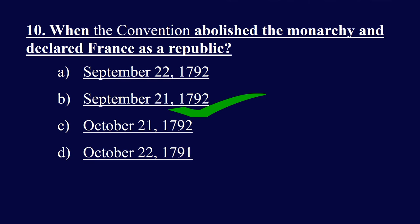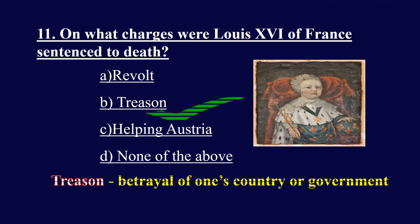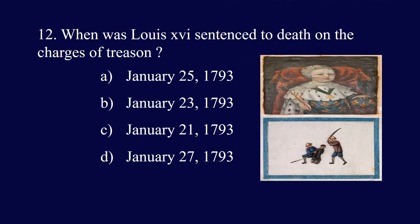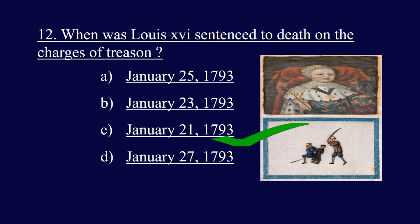Question eleven: On what charges was Louis 16 sentenced to death? Options: revolt, treason, helping Austria, or none of the above. The right answer is B, treason — treason means betrayal of one's country or government. Louis 16 secretly held meetings with the kings of Austria and Prussia to suppress the French Revolution, and therefore was sentenced to death on charges of treason. Question twelve: When was Louis 16 sentenced to death? Options: January 25, 1793; January 23, 1793; January 21, 1793; or January 27, 1793. The right answer is C, January 21, 1793.